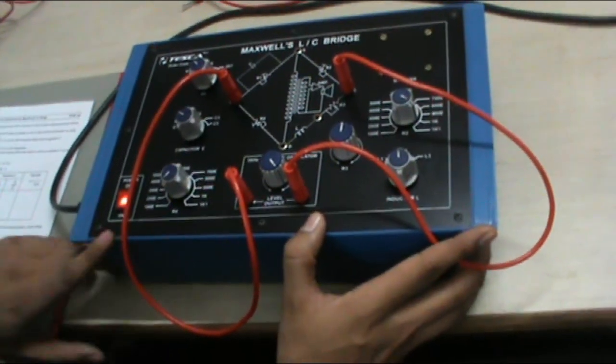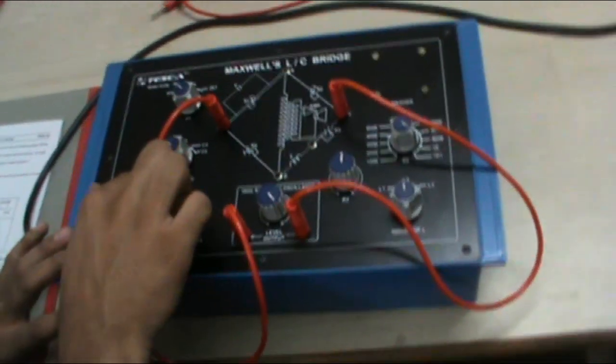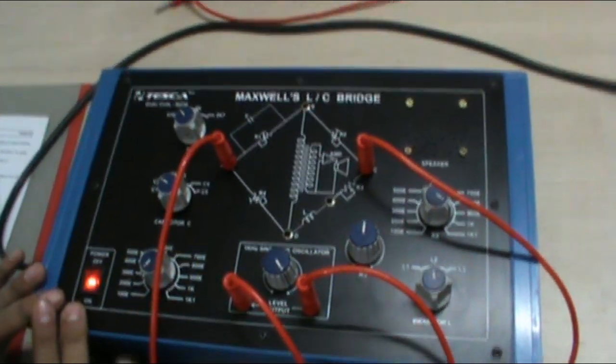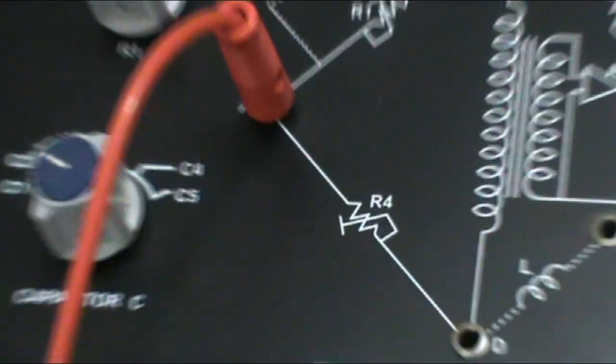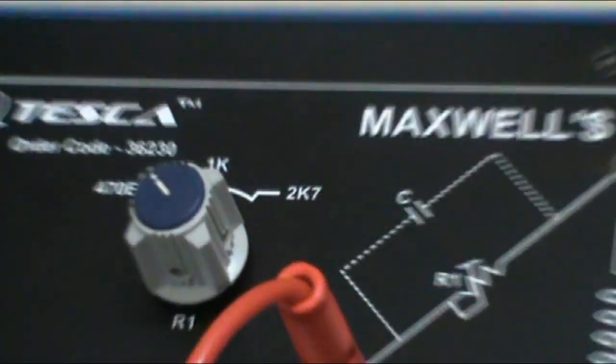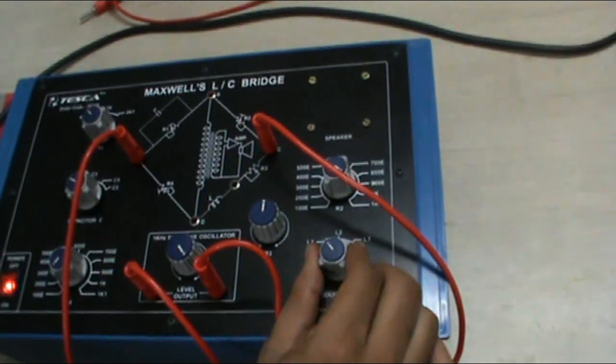We have to select capacitor as C1. C1 is selected. Now select R1 as 470 ohm. 470 ohm is selected. Keep inductor L to any value: L1, L2, L3. We keep it to L1.